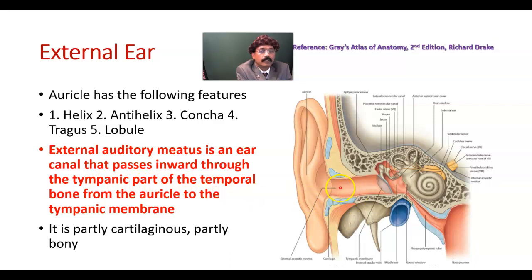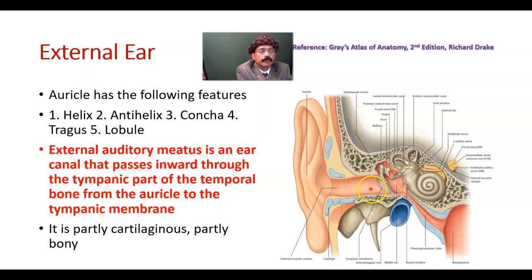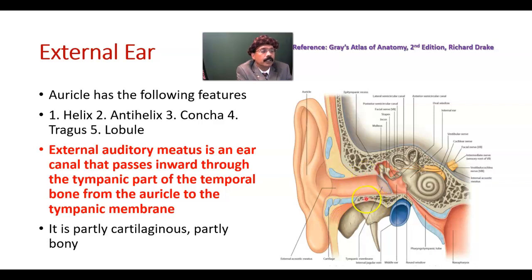This is the external auditory meatus extending from here to the tympanic membrane, specifically the outer layer of the tympanic membrane. It is partly cartilaginous — this is elastic cartilage — and partly bony. This is the bony part of the temporal bone, the tympanic part of the temporal bone.